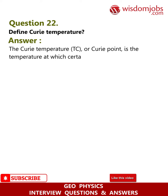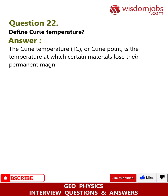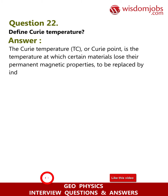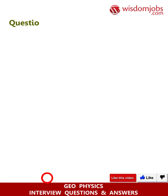Question 22: Define Curie temperature. Answer: The Curie temperature (Tc), or Curie point, is the temperature at which certain materials lose their permanent magnetic properties, to be replaced by induced magnetism.